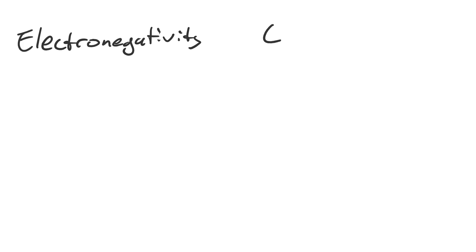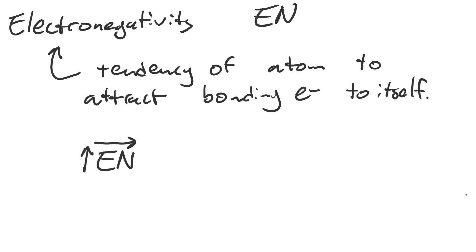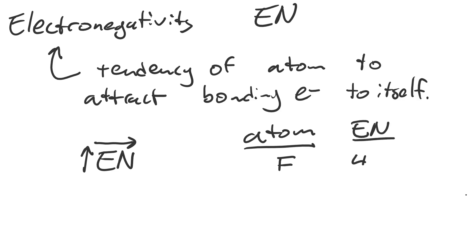A quick note about electronegativity: electronegativity is the tendency of an atom to attract bonding electrons to itself. Electronegativity varies as a function of position on the periodic table. It increases as you go up and to the right. The maximum electronegativity is found with fluorine — its electronegativity value is 4.0. The minimum is found with francium, whose electronegativity is 0.7.